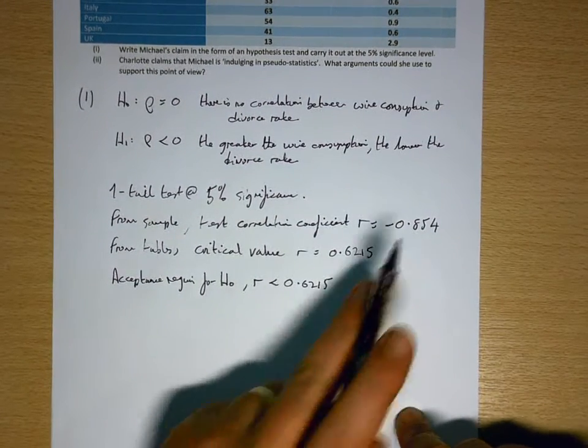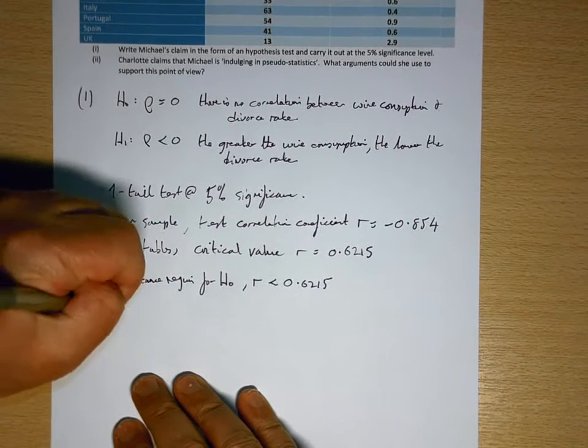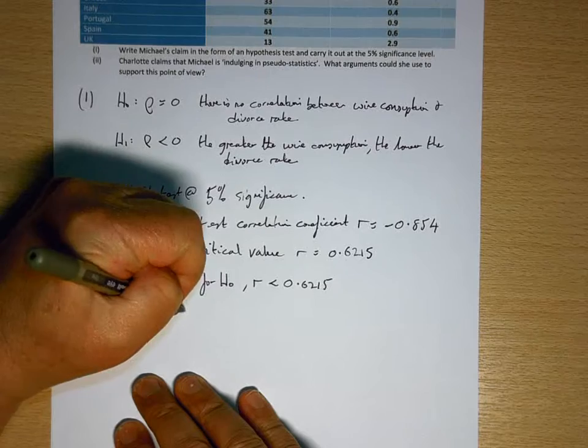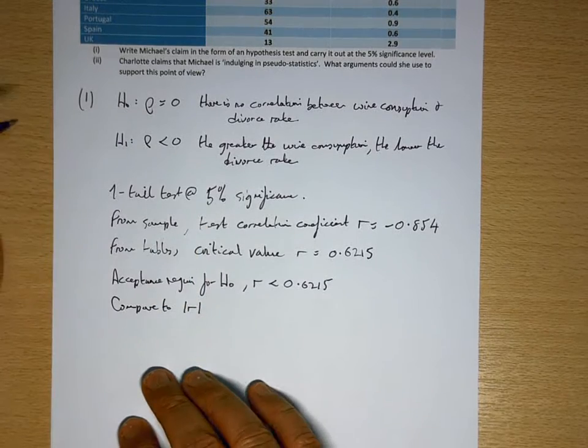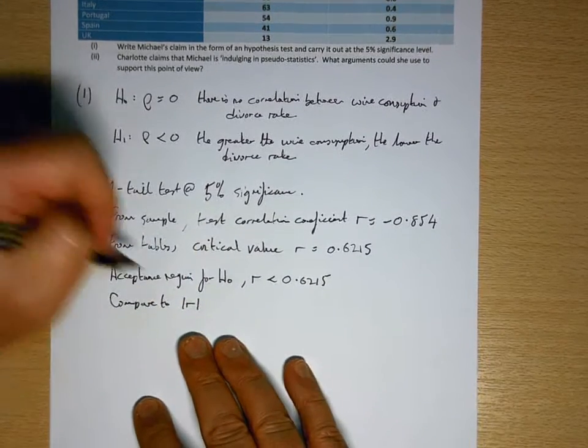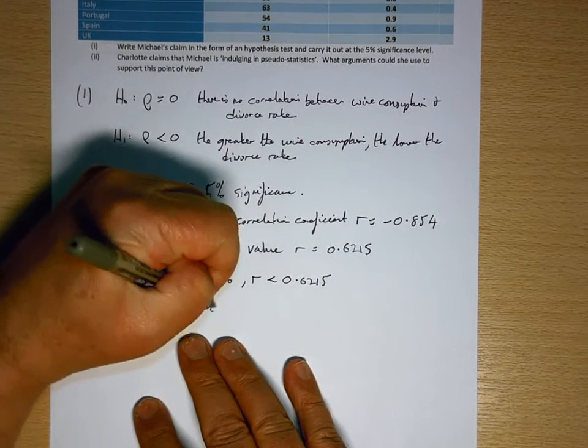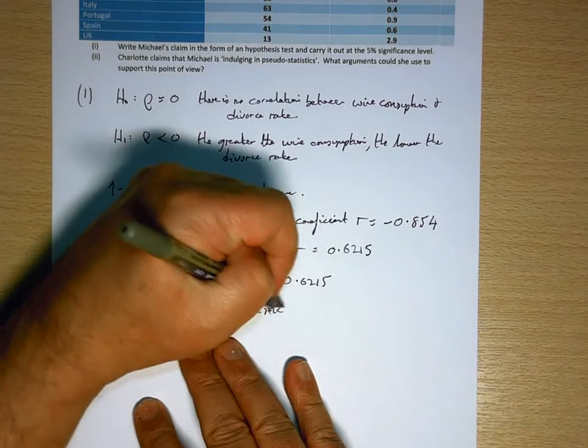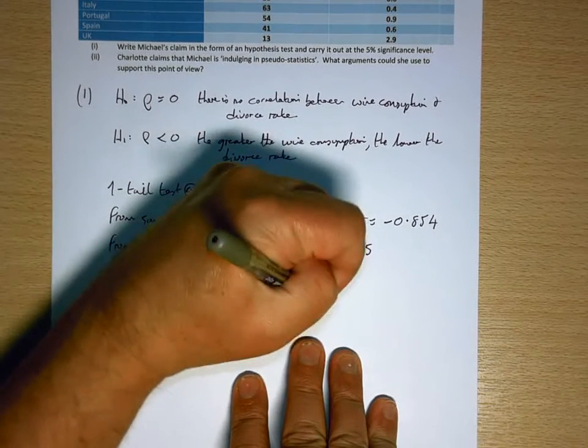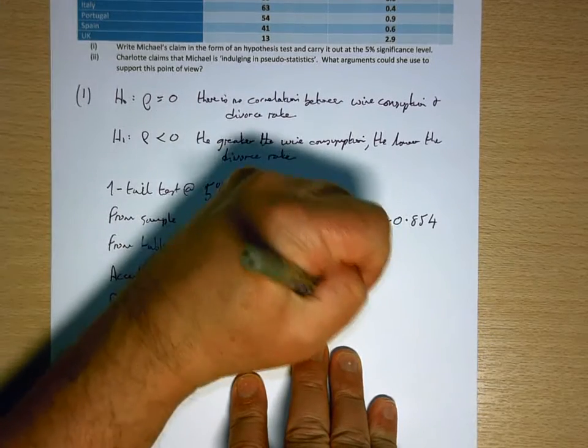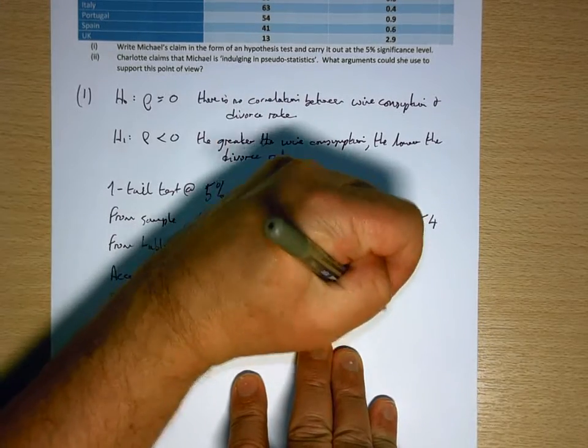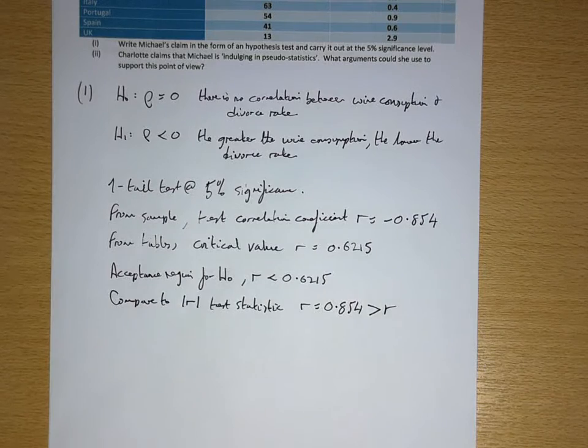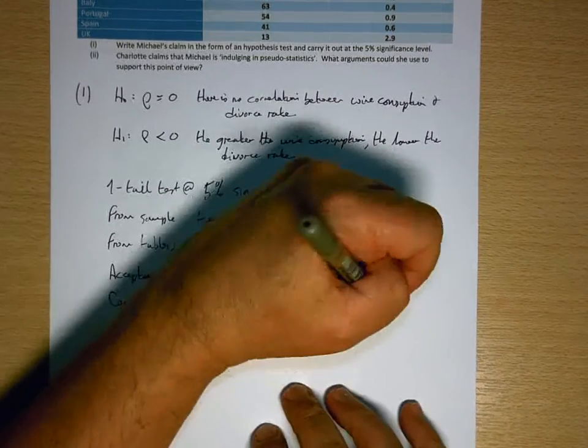OK, the modulus forces it to be positive. Test statistic, so for us that is 0.854, which is greater than R, the critical value.